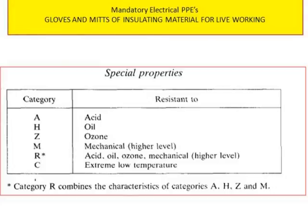There are special property categories: A, H, Z, M, R, and C. Category A must be resistant to acid. Category H must be resistant to oil. Category Z must be resistant to ozone. Category M must be resistant to mechanical damage. Category R combines the characteristics of A, Z, H, and M — resistant to acid, oil, ozone, and mechanical damage. Category C is for extreme low temperature.